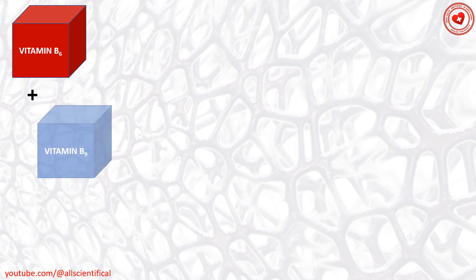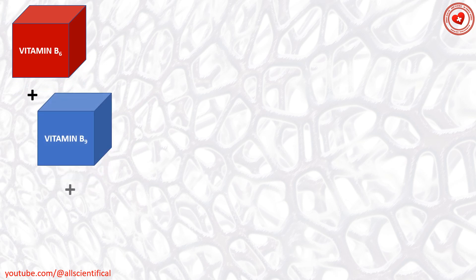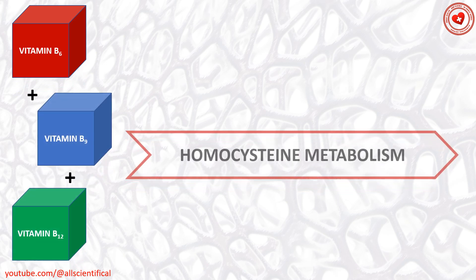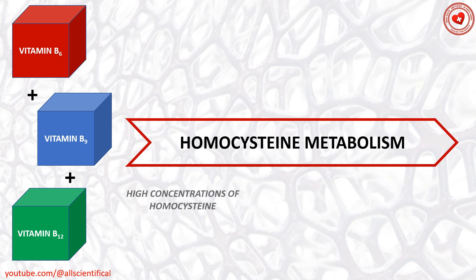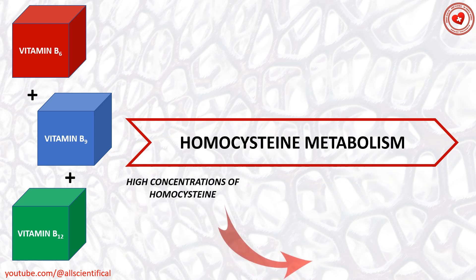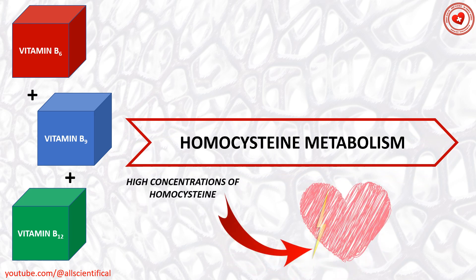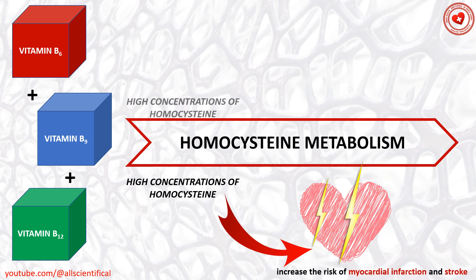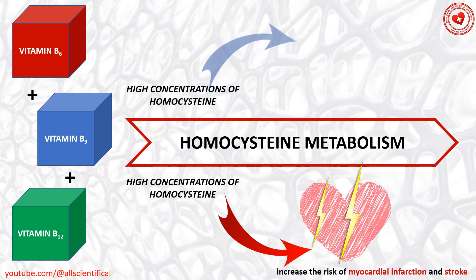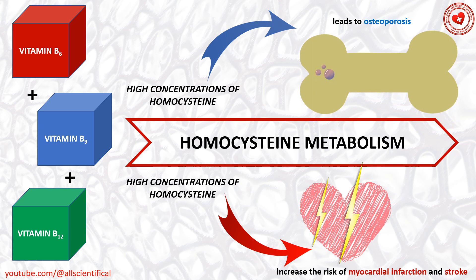Vitamin B9, together with vitamin B6 and B12, is necessary in the metabolism of homocysteine. It is known that high concentration of homocysteine in the body increases the risk of myocardial infarction and stroke. Also, homocysteine excess leads to osteoporosis.